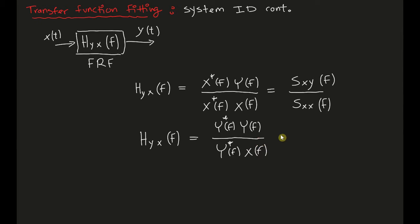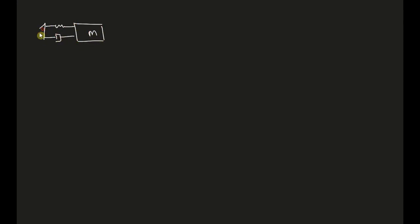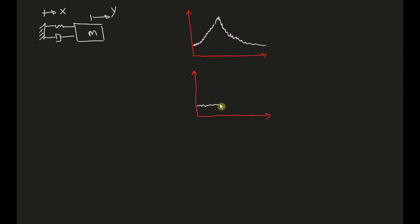Now assuming I have a single degree of freedom system — shown here by the spring, dashpot, and mass m — the base motion is the input x and the motion of the mass is the output y. The experimentally obtained frequency response function will have noise, producing little ripples. We have amplitude, phase, and frequency, and what we want to do is fit this frequency domain data with a transfer function that describes this dynamical process.